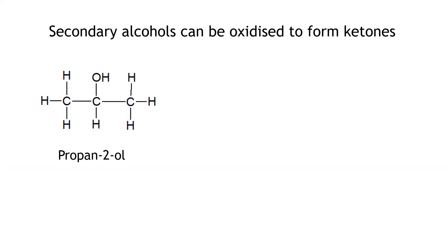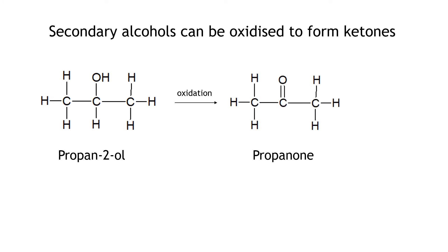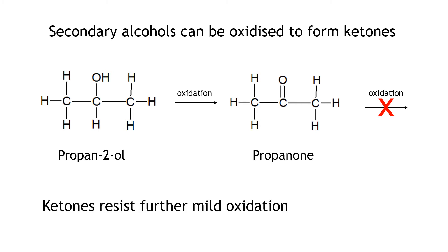When secondary alcohols are oxidised, such as propan-2-ol, they form ketones. So if we oxidise propan-2-ol with acidified dichromate or copper II oxide, we would get propanone being formed — a ketone. The important thing to note about propanone, or any ketone, is that further oxidation does not occur. So we say that ketones resist further mild oxidation by oxidising agents.